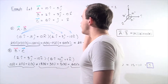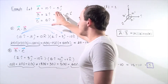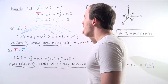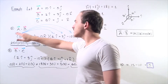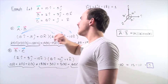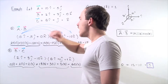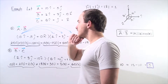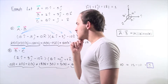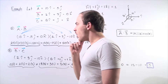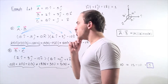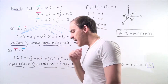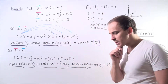Let's suppose we are given the following three vectors, and we want to find the dot product of vectors A and B, and the dot product of vectors B and C. Before we begin our calculations, let's recall some facts about unit vectors.